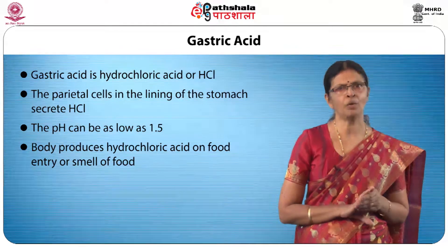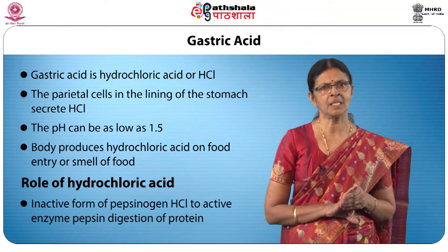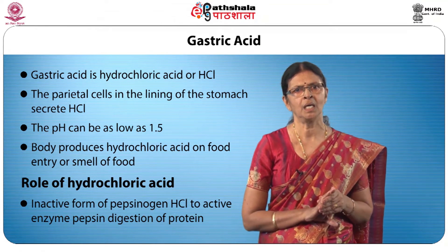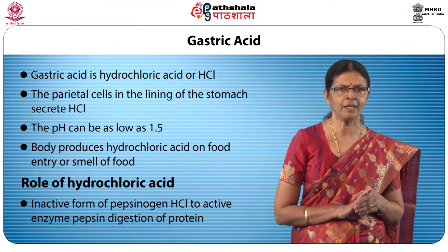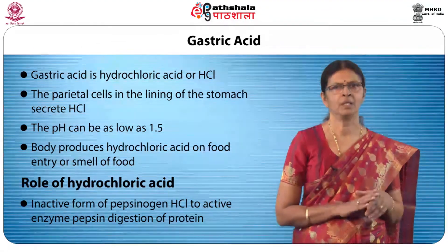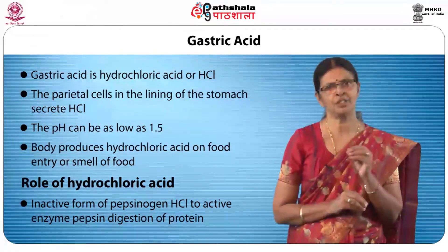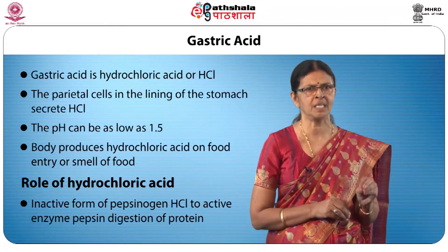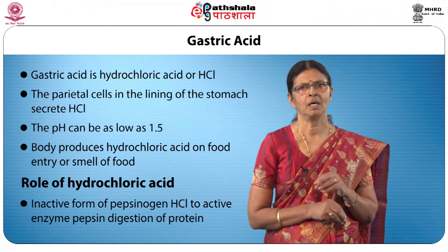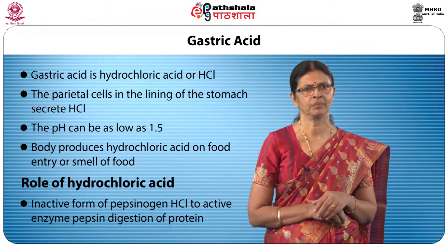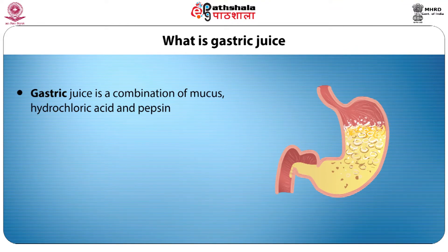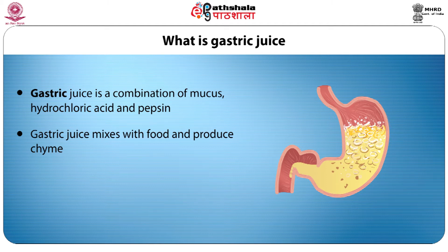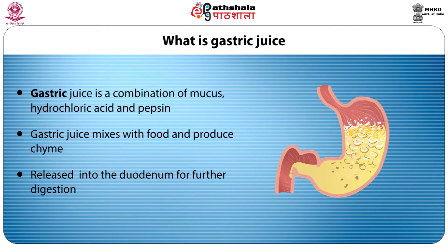The role of hydrochloric acid in the stomach is important. The inactive enzyme pepsinogen is secreted by the gastric chief cells of the stomach for protein breakdown. Hydrochloric acid converts the inactive form of pepsinogen to the active enzyme pepsin. The enzyme pepsin helps in the digestion of protein by breaking the bonds linking amino acids, a process known as proteolysis. Gastric juice is a combination of mucus, hydrochloric acid, and pepsin. Gastric juice mixes with food to produce chyme, which is released into the duodenum for further digestion.